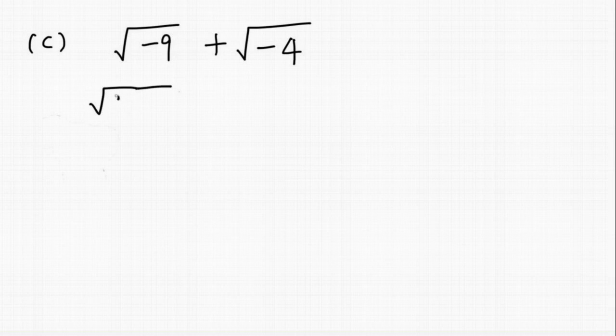So negative 9 is 9 times negative 1. And if you separate them out, we have square root of 9 times square root of negative 1. Square root of 9 is 3, square root of negative 1 is i, so this is 3i.